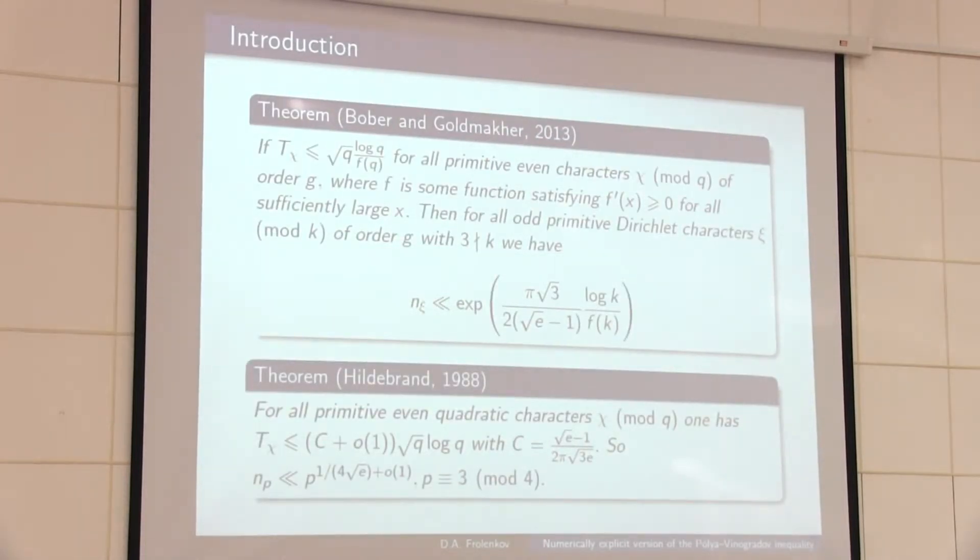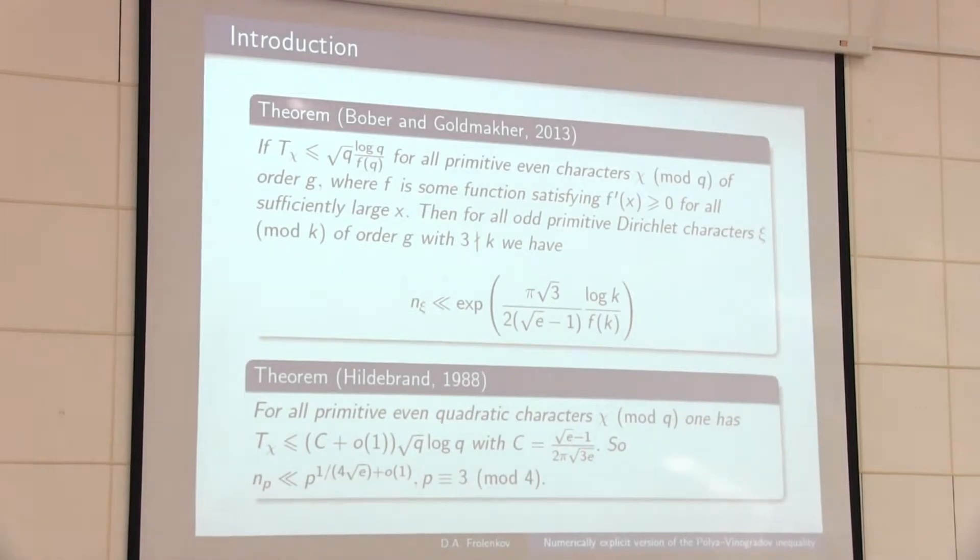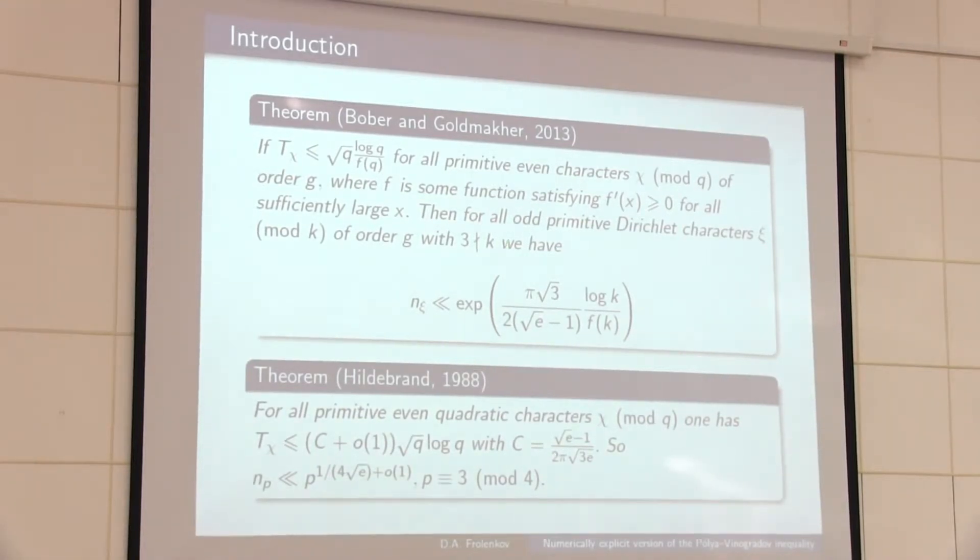They proved that if we have such inequality with some function that must satisfy some conditions—of course F may be even a constant—for all primitive even characters, then we will have a bound of the quantity for all primitive or primitive characters, but with a weaker constant.